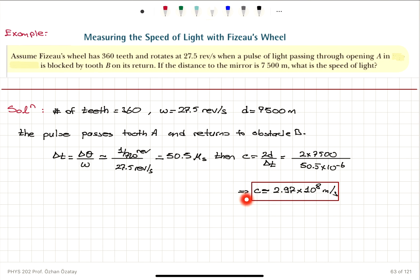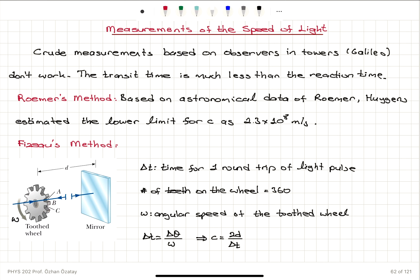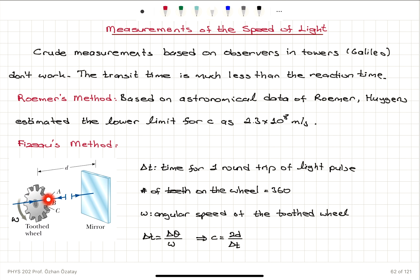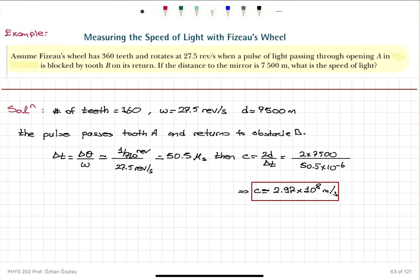This method only gives us an estimation. For example, if light goes through opening A and hits obstacle B so we don't see the reflected light, that corresponds to 1/720 revolutions, given 360 teeth. From the known angular speed we calculate the transit time, but the speed of light is an estimate because we don't know exactly at which point the light pulse passes through opening A and then hits obstacle B. We can get a nice estimation of the speed of light using Fizeau's wheel method.